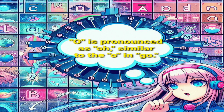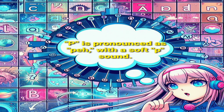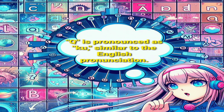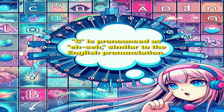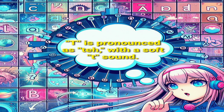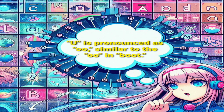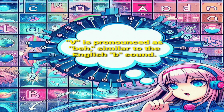O is pronounced as 'o', similar to the o in go. P is pronounced as 'pe', with a soft p sound. Q is pronounced as 'cu', similar to the English pronunciation. R is pronounced as 'ere', with a rolled r sound. S is pronounced as 'ese', similar to the English pronunciation. T is pronounced as 'te', with a soft t sound. U is pronounced as 'oo', similar to the oo in boot. V is pronounced as 'uve', similar to the English b sound.